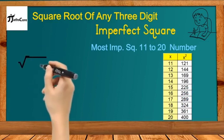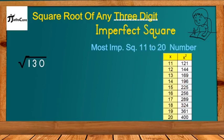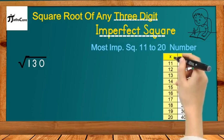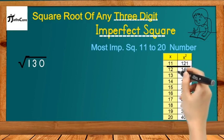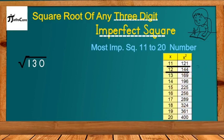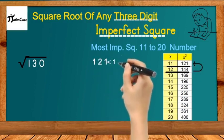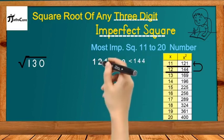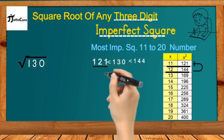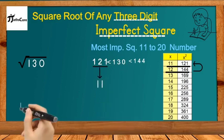Let's take our first example: the square root of 130, which is a three-digit imperfect square. According to the Vedic math technique, we first find between which two perfect squares 130 lies. The answer is 11² = 121 and 12² = 144, so 130 lies between 121 and 144. We select the smaller perfect square, 121, and its square root is 11, so we write down 11.